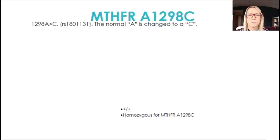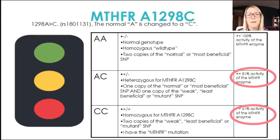When it comes to the MTHFR A1298C genetic SNP, you could be homozygous wild type, heterozygous, or homozygous for the genetic weakness. For enzyme activity, being heterozygous means your MTHFR enzyme activity is 81% — a 19% reduction. And if you're homozygous for this one, your enzyme activity goes down to 61%, a 39% reduction.